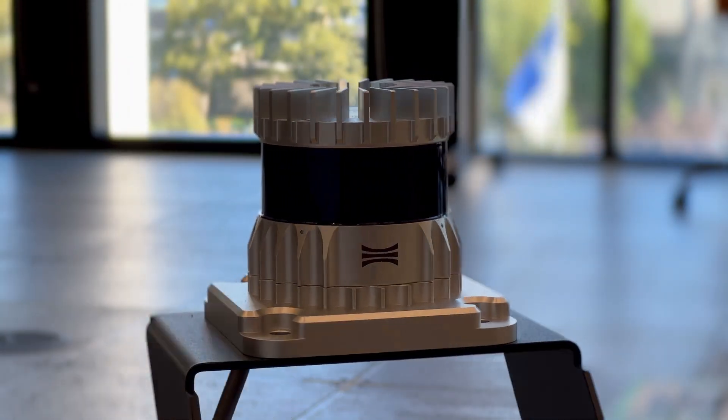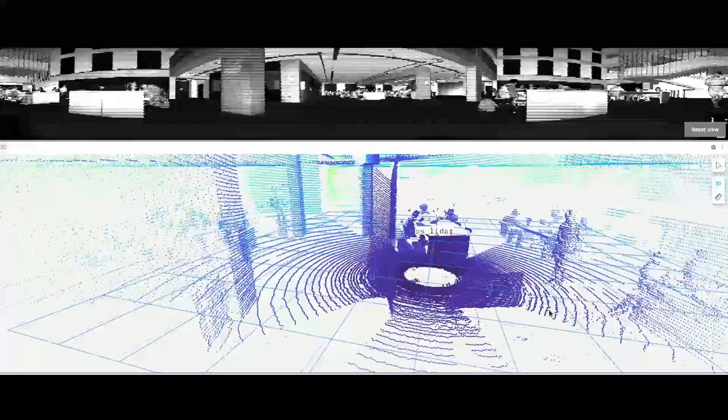It all starts with the Ouster OS0-128 LiDAR. The Ouster LiDAR generates massive point clouds at 10Hz where the reflectivity image is comparable to low-resolution cameras.